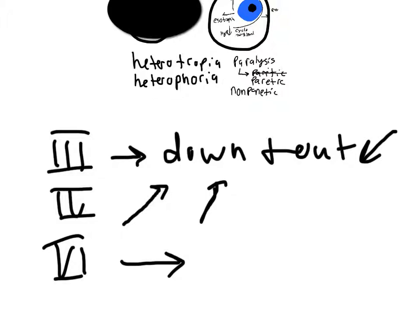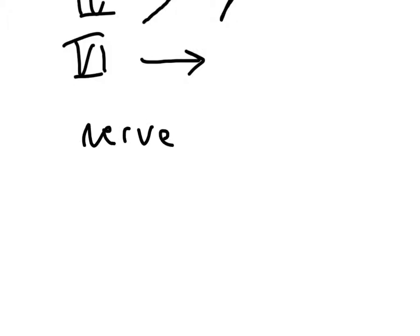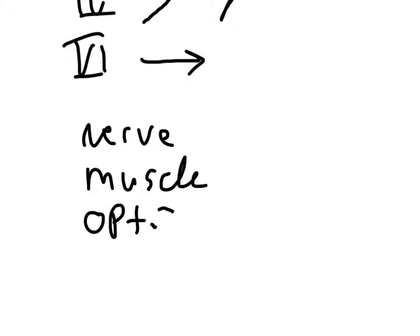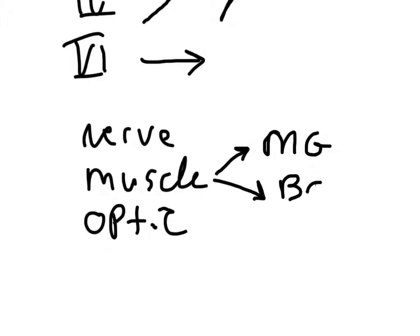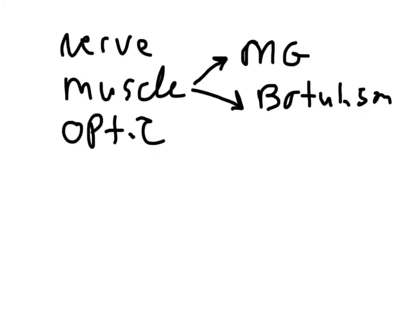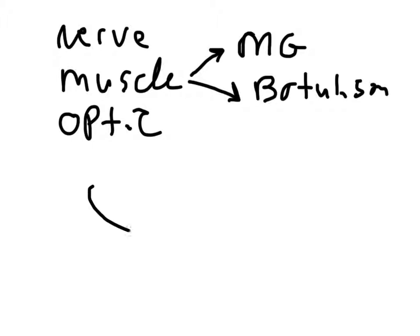Due to these being nerves, there could be a number of impairments that cause damage, so we classify causes as nerve problems, muscle problems, or optic problems. For muscle problems, we could have something like myasthenia gravis or botulism. With cosmetic Botox, if someone isn't trained to do it, there's a good chance they can affect one of the eye muscles.